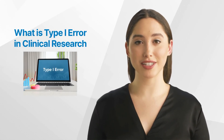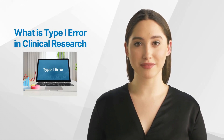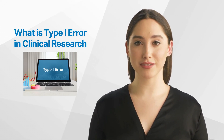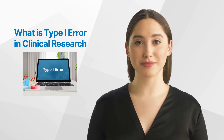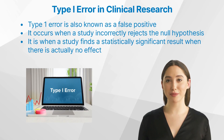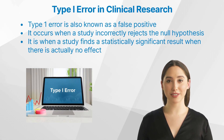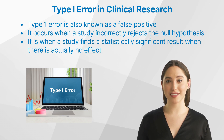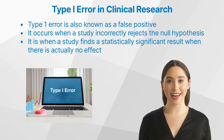Hello and welcome back to the GCP Mindset channel. Today we'll talk about type 1 error in clinical research. Type 1 error, also known as a false positive, occurs when a clinical research study incorrectly rejects the null hypothesis. In other words, it is when a study finds a statistically significant result when there is actually no effect.